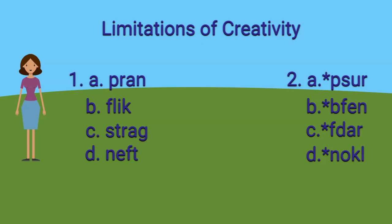I have another example. I have two sets of words — try to pronounce them. None of them appear in the dictionary. Which side is easier to pronounce? If you feel that the left-hand side is easier, think about the clusters on the left: PR, FL, STR, and FT.